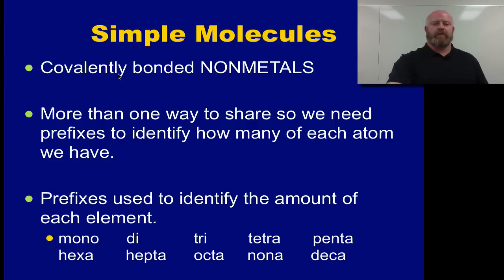Our simple molecules, if we recall, are covalently bonded non-metals, so you should find everything here as non-metals. And because we are covalently bonded, it means that we're sharing electrons. So when we share electrons, we can do so in more than one ratio. We can have a one to one ratio, a one to two, a two to two, there's lots of different ratios in which we can share our different elements. So because we have more than one possible ratio, we need to use prefixes to identify how many of each substance we have in our compound.